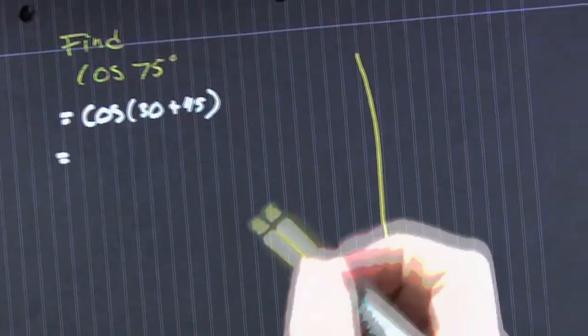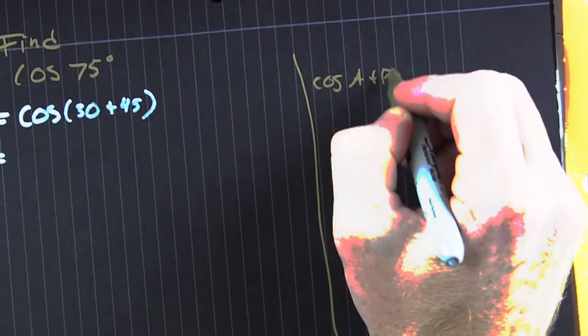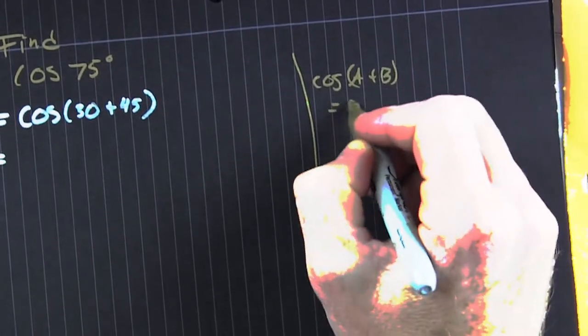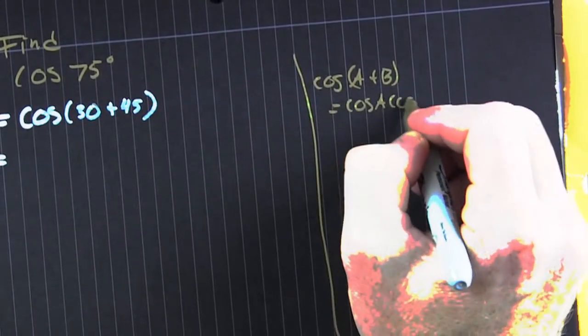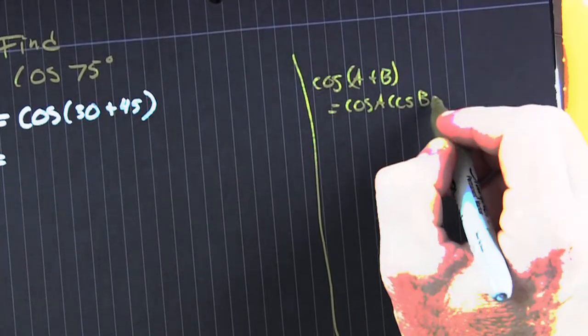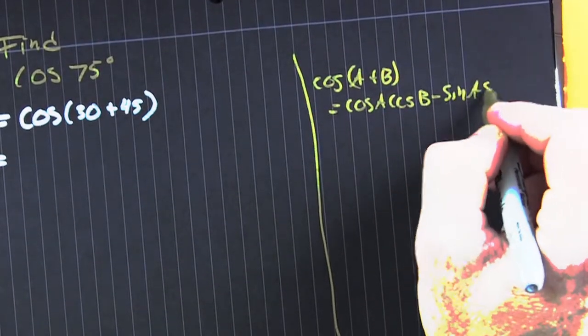But what are you going to use? We're using the cosine of the sum of angles. That's the cosine of A plus B. That's the cosine of A, cosine of B minus the sine of A, sine of B.